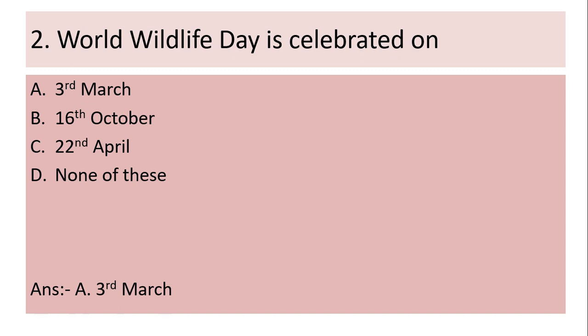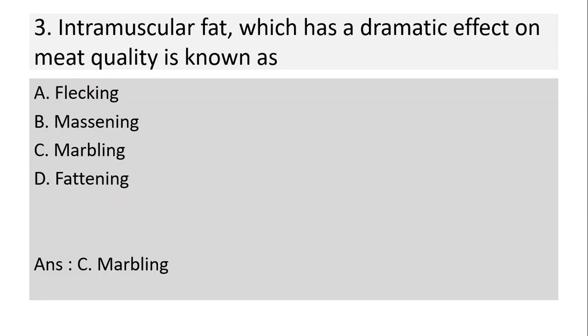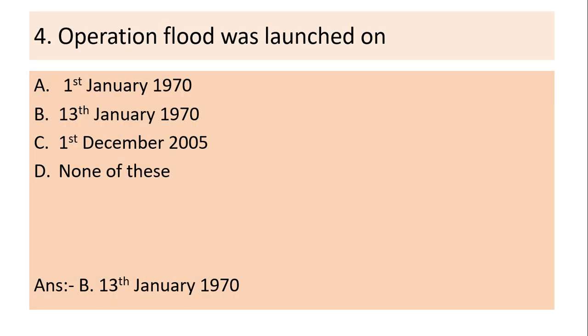Third question: Intramuscular fat which has a dramatic effect on meat quality is known as — (a) flexing, (b) machining, (c) marbling, (d) fattening. Answer is (c) marbling. Fourth question: Operation Flood was launched on — (a) 1st January 1970, (b) 13th January 1970, (c) 1st December 2005, (d) none of these.